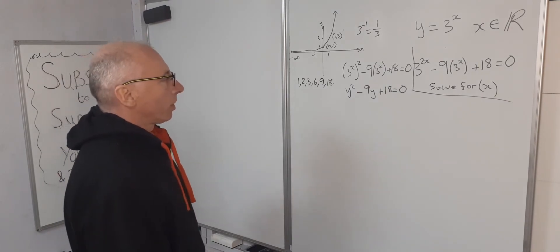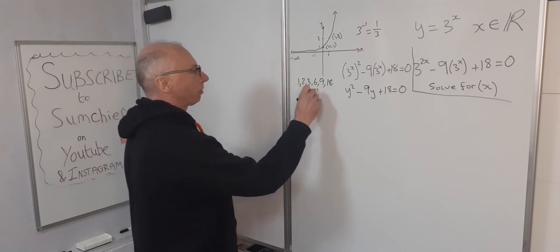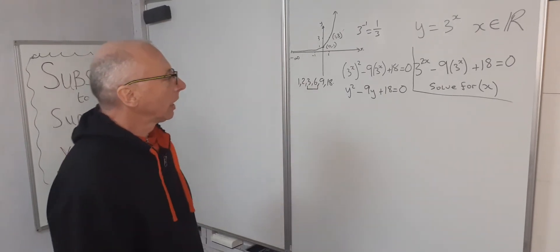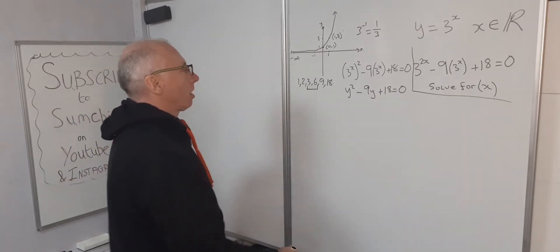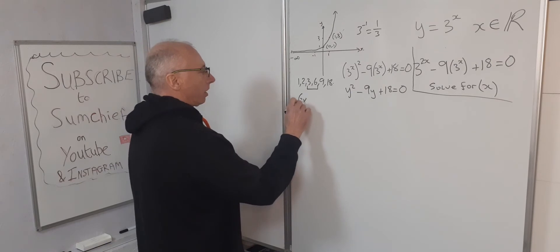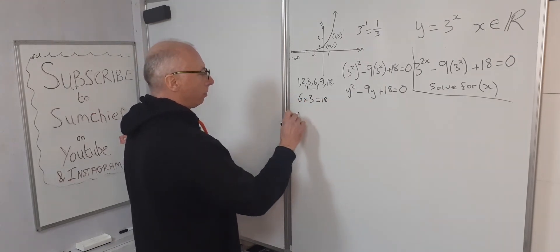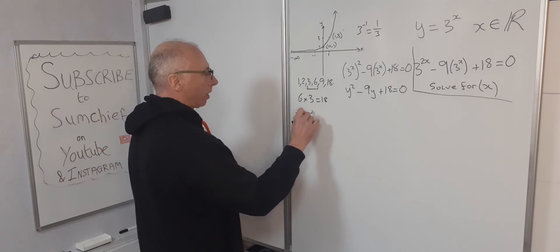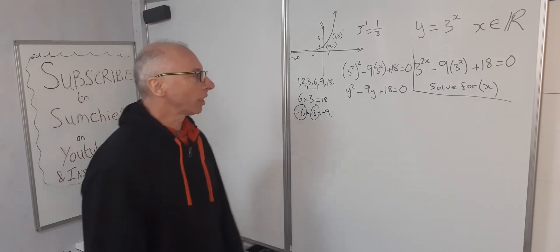So which ones are going to give us a 9? So 6 plus 3 is 9. So that's a good start. So we'll take those two there and then multiply together to get plus 18. 6 times 3 are 18. So that's fine. And then to get minus 9 we have minus 6 plus minus 3 equals minus 9. So therefore we want minus 6 minus 3.